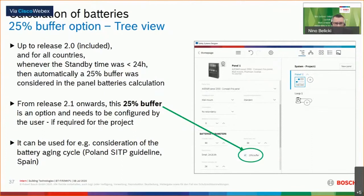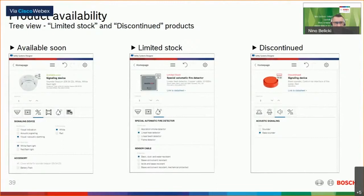A very important feature is product availability. As soon as you open Safety Systems Designer, you get information on the status of products. For example, if a product is end-of-life, you cannot use it and must pick another device. A linear heat detector shown here has limited stock and will probably also reach end-of-life. And another product is still not available but is coming soon.